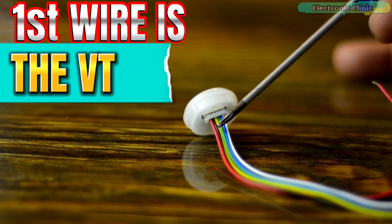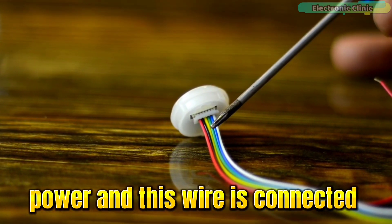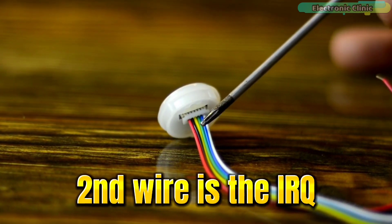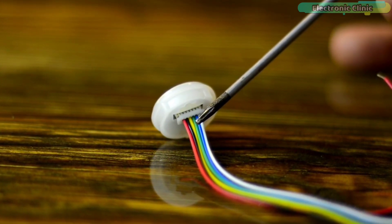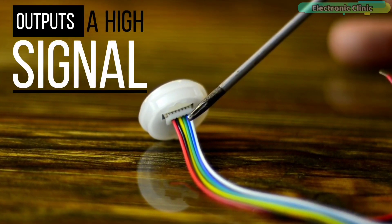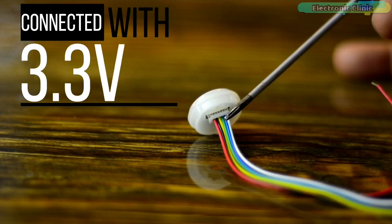First wire is the VD. This is the finger detection power and this wire is connected with 3.3 volt. Second wire is the IRQ. This is the finger detection signal wire. When there is a finger, it outputs a high signal. Third wire is the VCC and it should be connected with 3.3 volt.